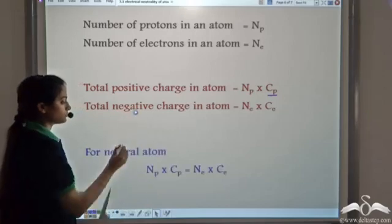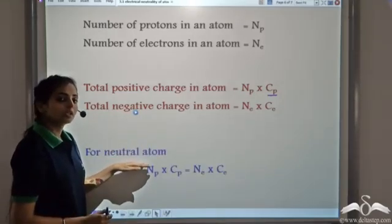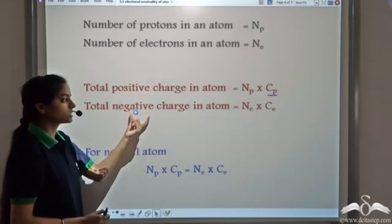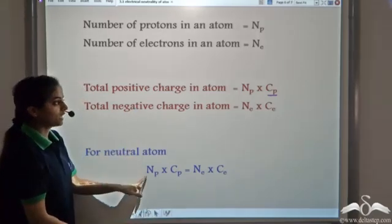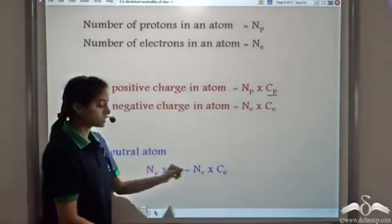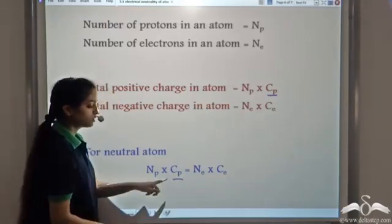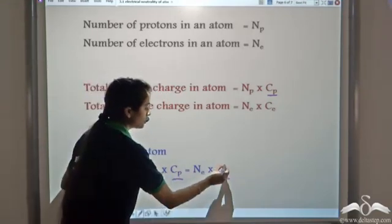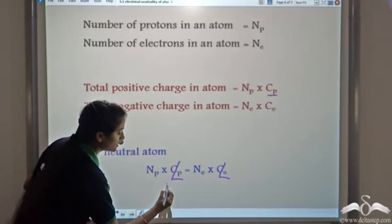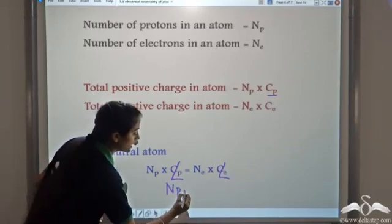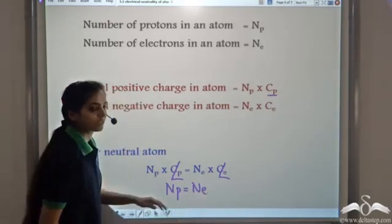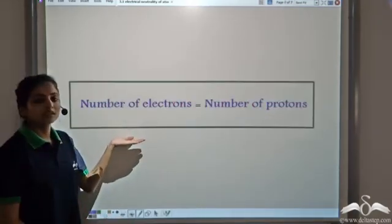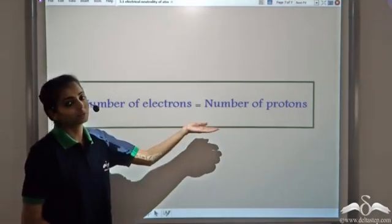Now for the neutral atom, since we know the atom is always electrically neutral, the total positive charge equals the total negative charge. So we get NP times CP equals NE times CE. Since the magnitude of the charge of proton equals the magnitude of the charge of electron, we can cancel these. Therefore, the number of protons in an atom equals the number of electrons. So for an electrically neutral atom, the number of electrons is always equal to the number of protons.